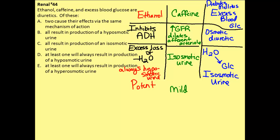This can range: when someone is early on in diabetes, it might be a mild effect of the blood glucose, but certainly in untreated diabetes mellitus this could be a rather potent effect. So we have three different diuretics, each operating by different mechanisms, and we need to go back to our answer choices to see which one fits.